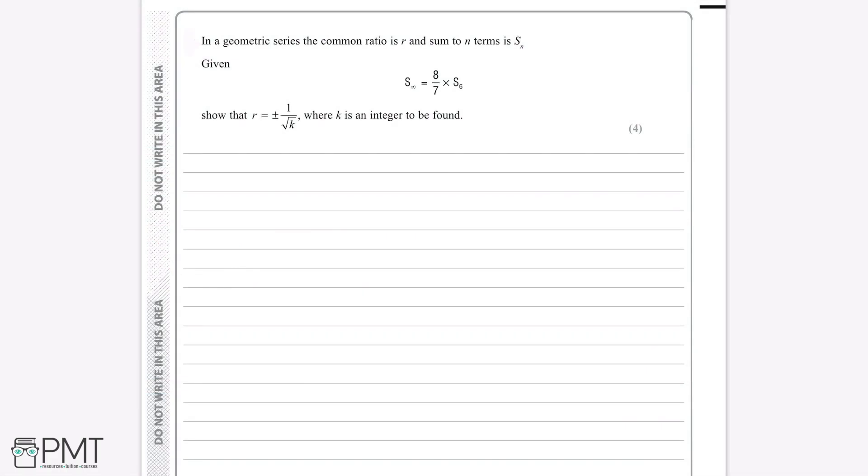In a geometric series, the common ratio is r and the sum to n terms is Sn. Given that the sum to infinity is equal to 8/7 multiplied by the sum of the first six terms, show that r is equal to plus or minus 1 over root k, where k is an integer to be found.